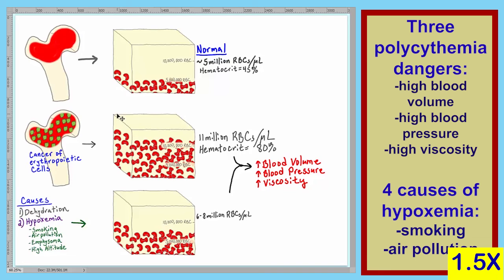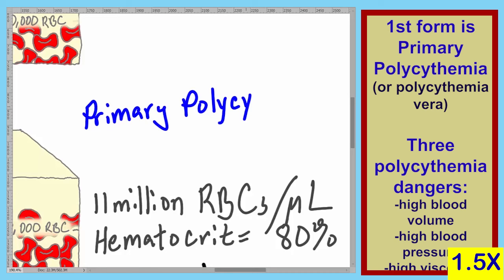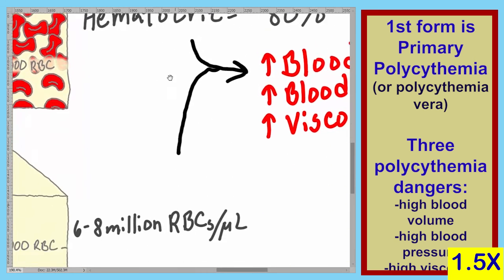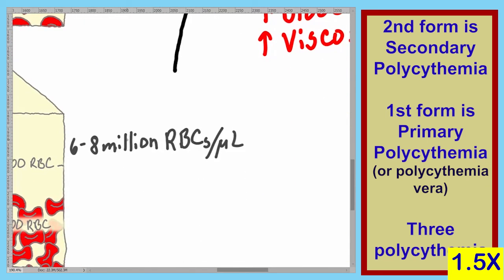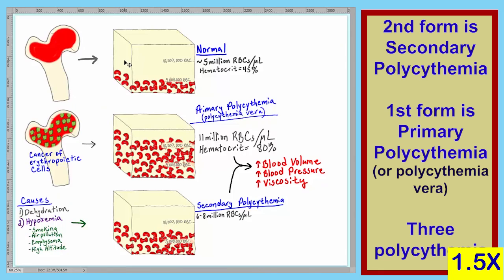This covers the two types of polycythemia. The first form is called primary polycythemia, or alternatively, polycythemia vera — meaning true polycythemia. The second form of polycythemia is called secondary polycythemia.